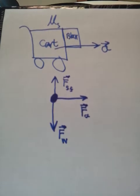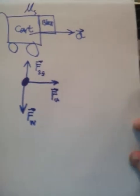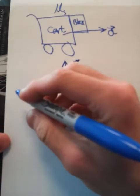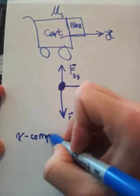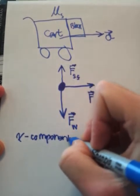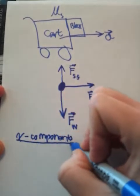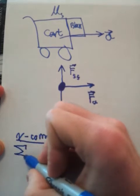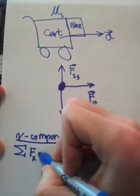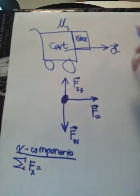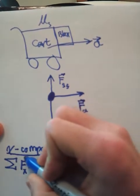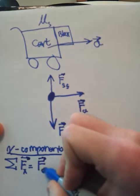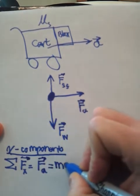After drawing the picture, let's break down all these forces mathematically into their x and y component equations. For the x components, the sum of all forces in the x direction — there's only one force, the applied force — so we can say that's equal to the applied force, which equals the mass of the block times the acceleration in the x direction.